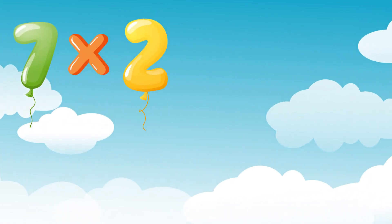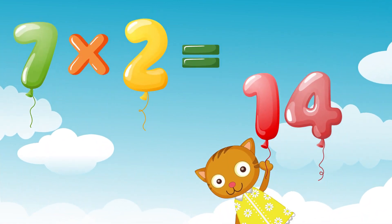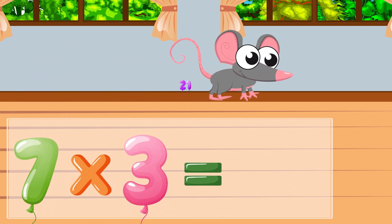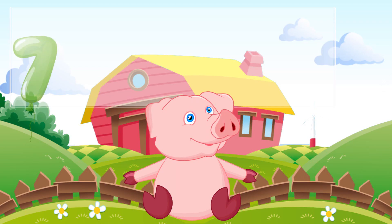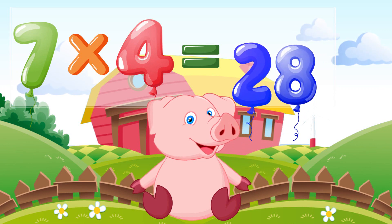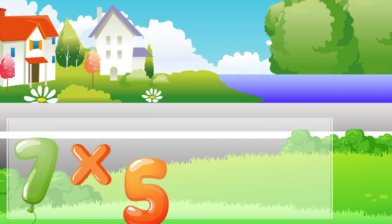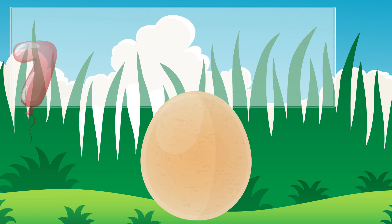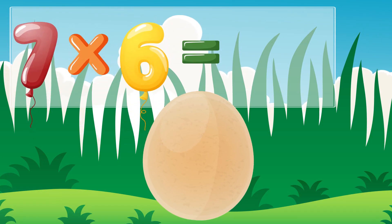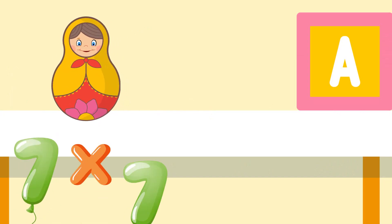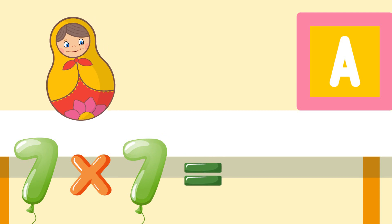Let's sing again. Seven times two is fourteen, seven times three is twenty-one, seven times four is twenty-eight, seven times five is thirty-five, seven times six is forty-two, seven times seven is forty-nine.